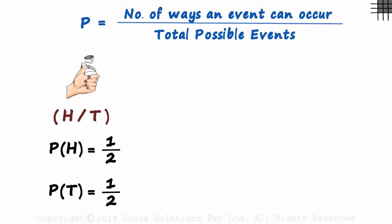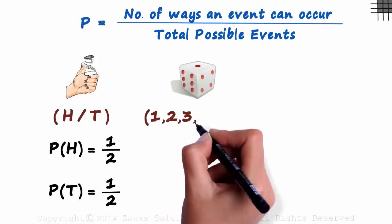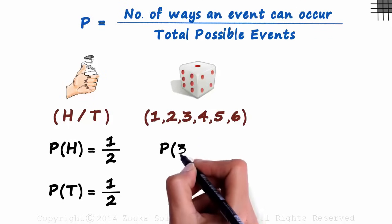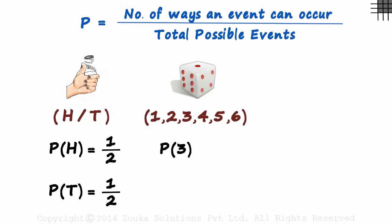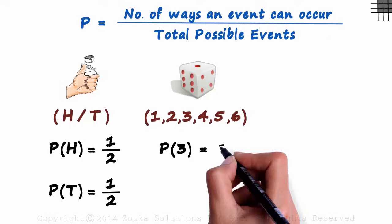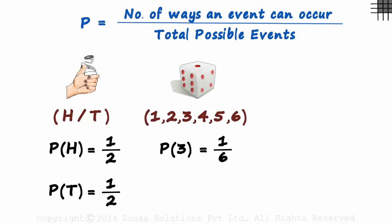Now let's look at the case of a fair die. If we roll a fair die, it will land on one of six numbers. What is the probability that the die will land a three? There is only one way in which we can get a three, and there are a total of six possibilities. The probability of getting a three at the roll of a die is one over six — it's slightly on the lower side.